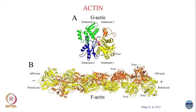When these globular actins — the monomeric forms — are in solution, here is my G-actin. When they are in solution, they come associated with an ATP molecule. Then when it polymerizes, when many of these G-actins polymerize to form your actin polymer, these ATPs will hydrolyze to form ADPs.